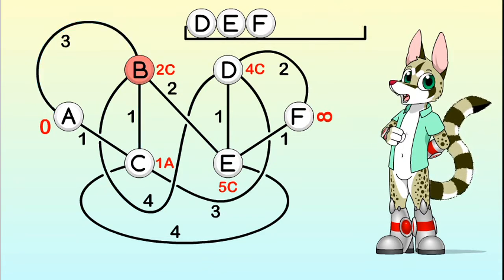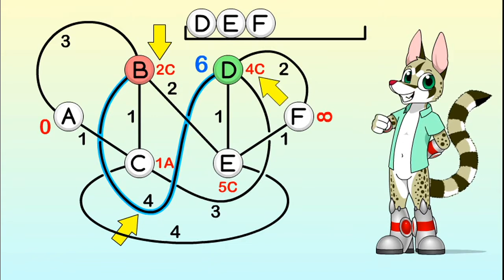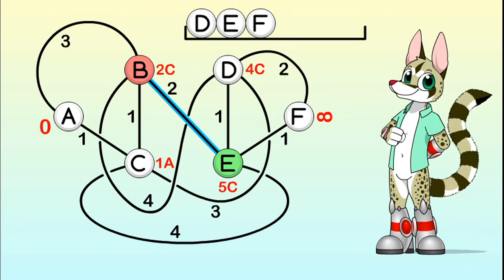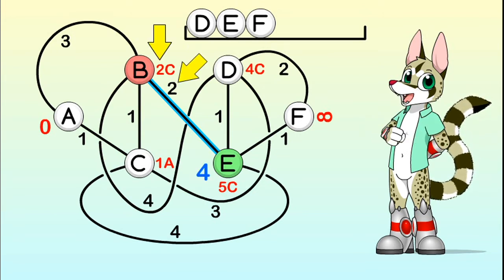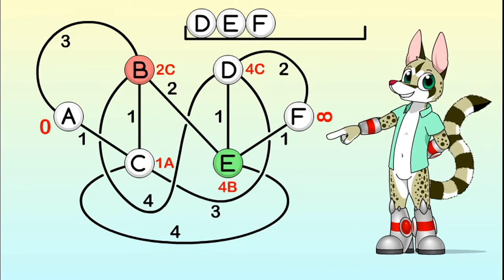Now, the distance from A to D going through B would be 2 plus 4, 6 units. This is worse than our current 4 units. That's because getting to D through C is shorter than going through B, so we don't update this data. However, getting to E through B gives us a 2 plus 2, 4 units long route, which is better than E's 5 units. That means that getting to E from B is actually more efficient than getting there through C, so we do update each data.